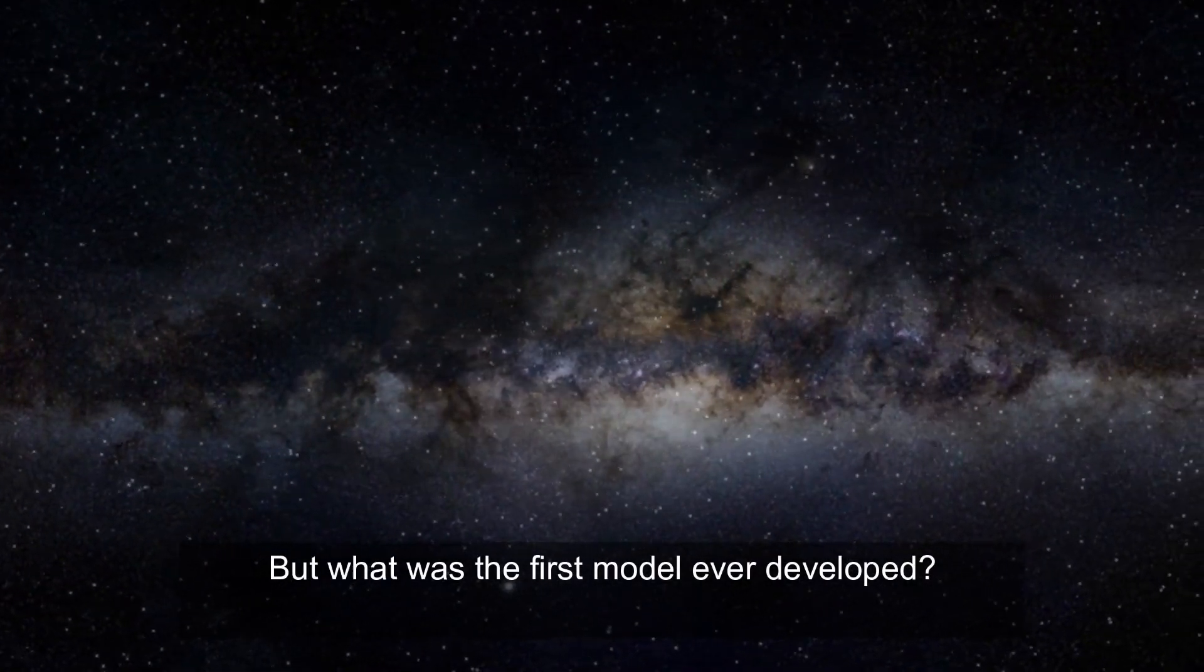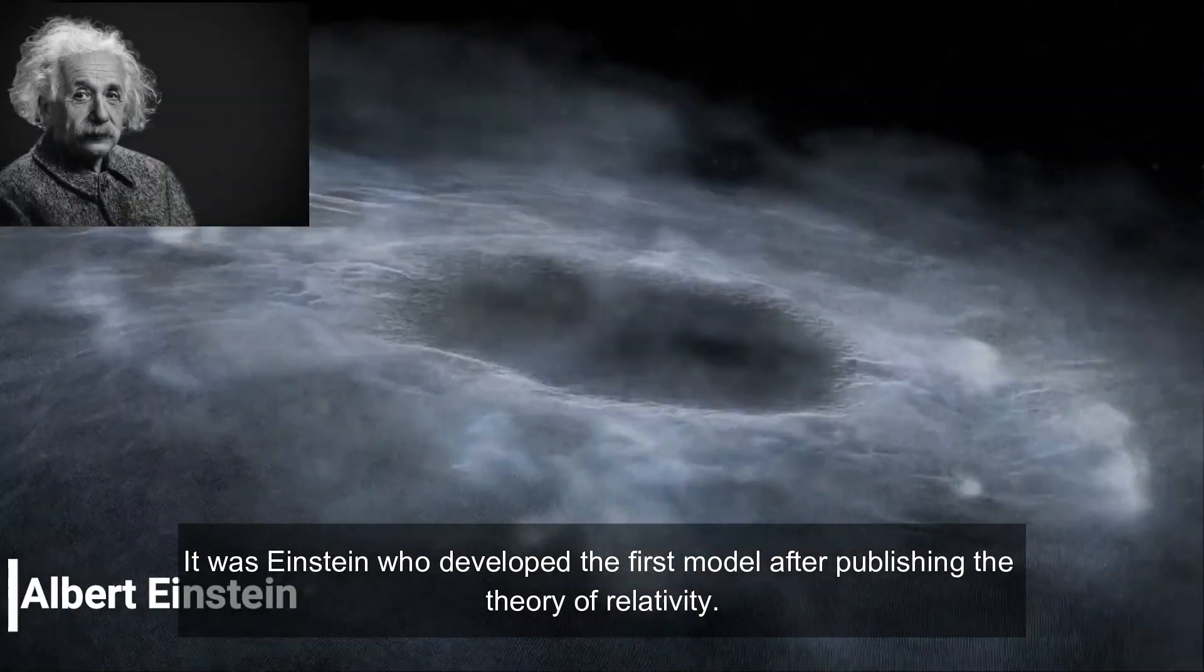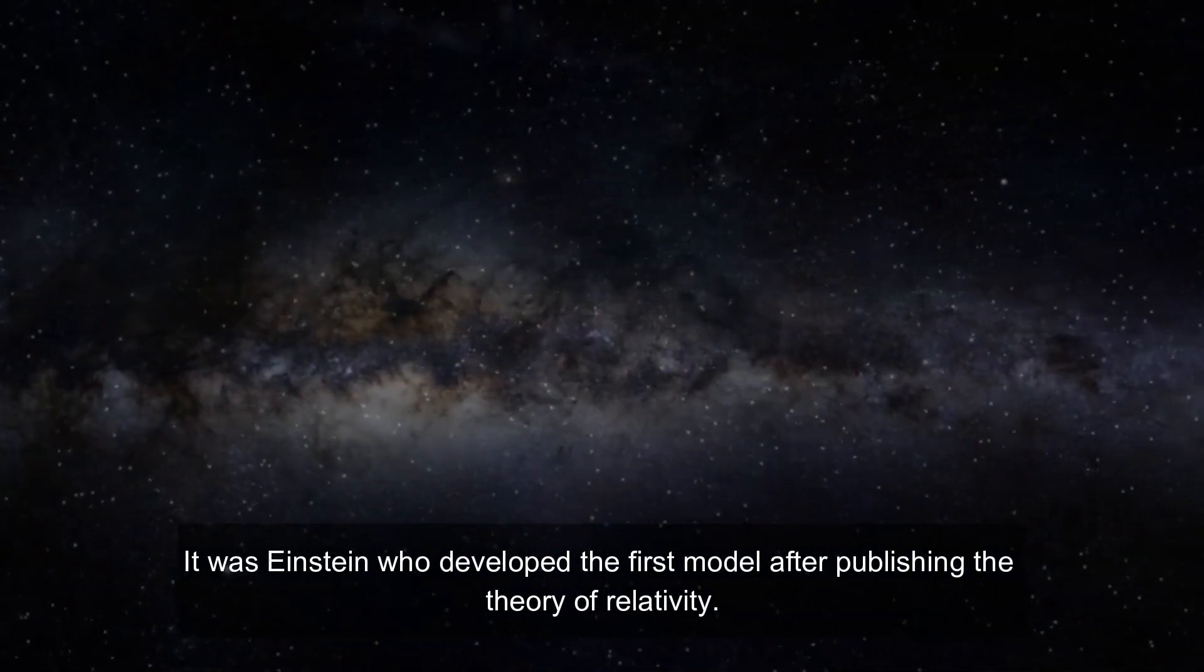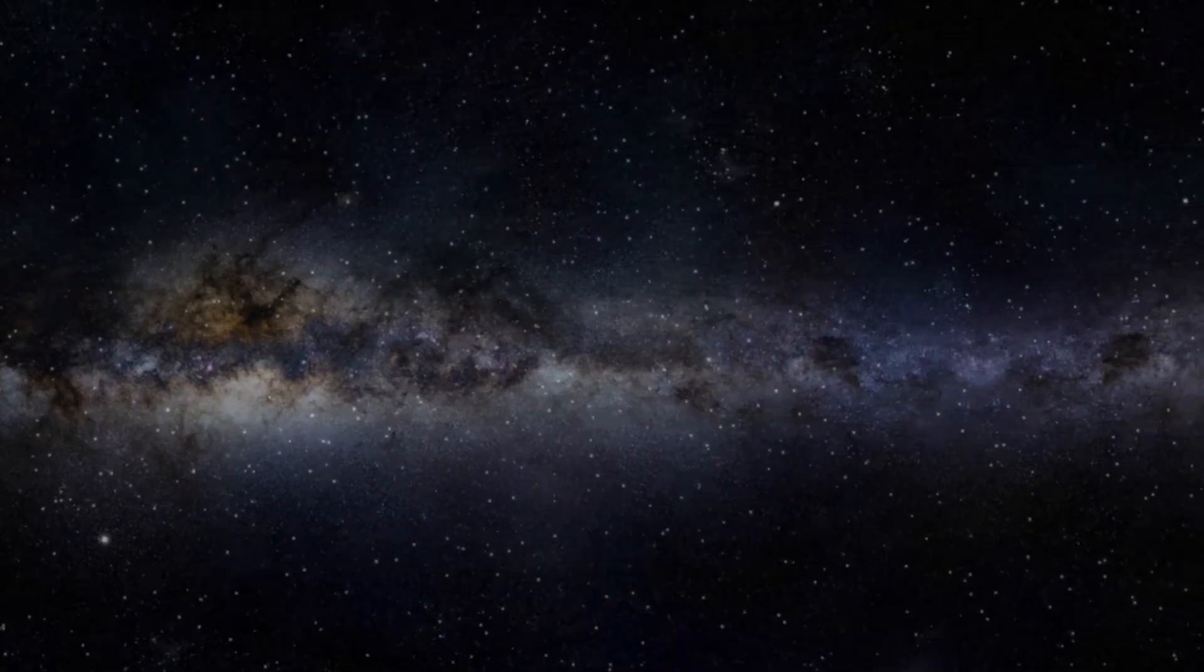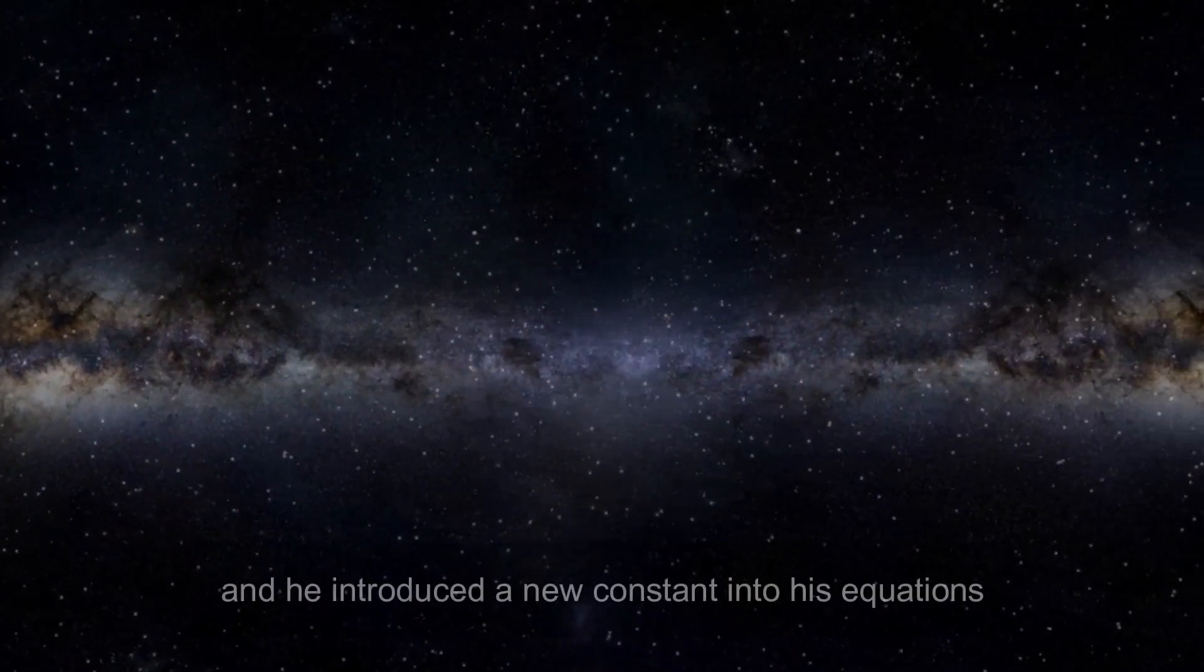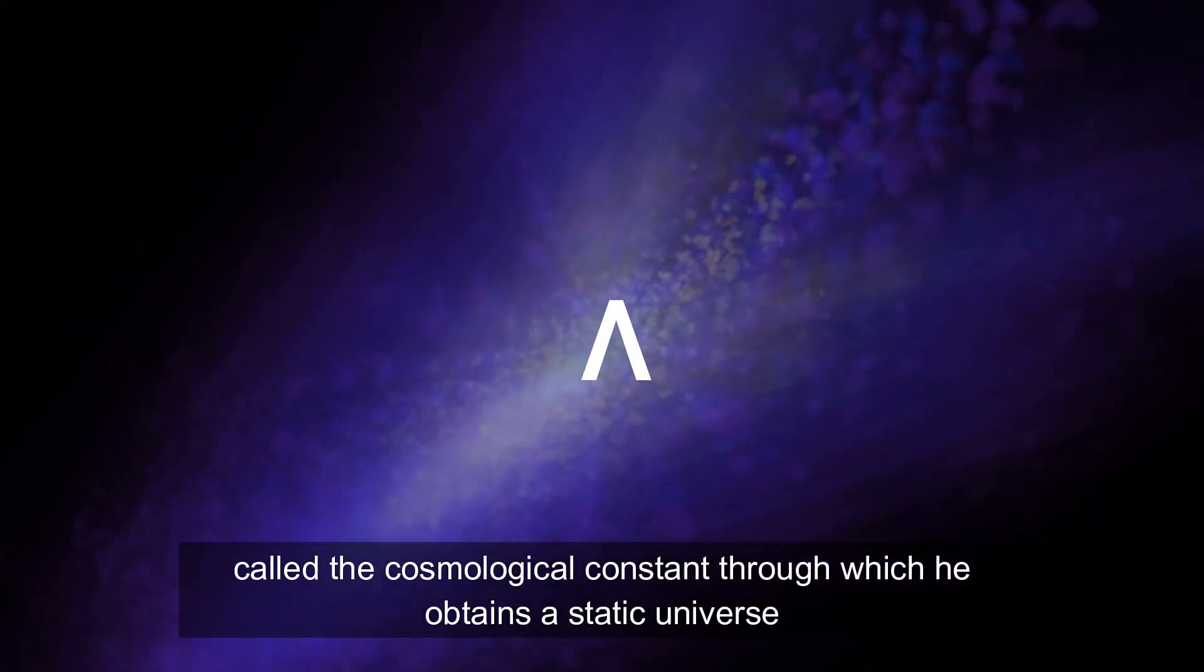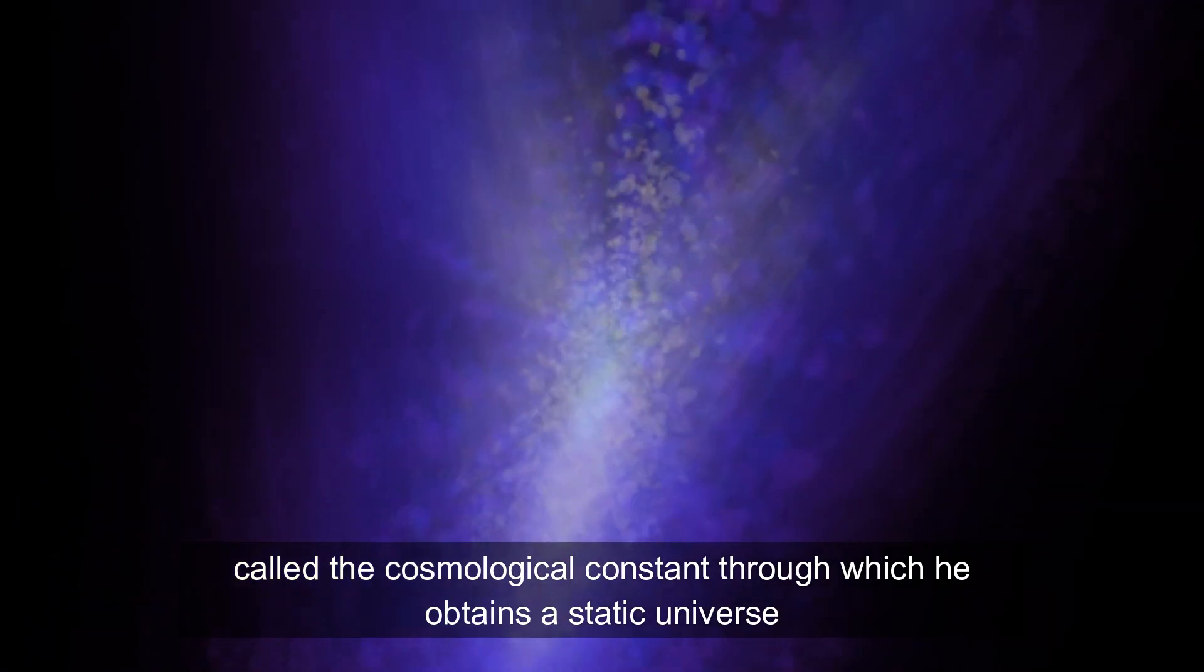But what was the first model ever developed? It was Einstein who developed the first model after publishing the theory of relativity. Einstein thought that the universe should be static and he introduced a new constant into his equations, called the cosmological constant, through which he obtained the static universe.